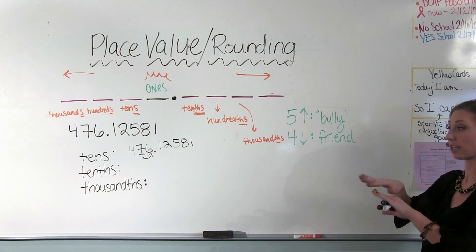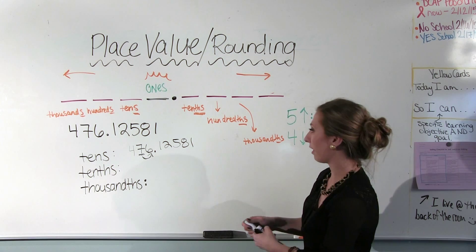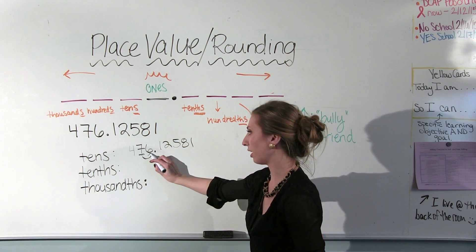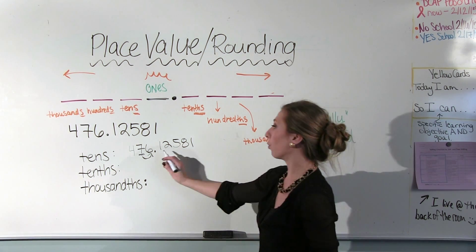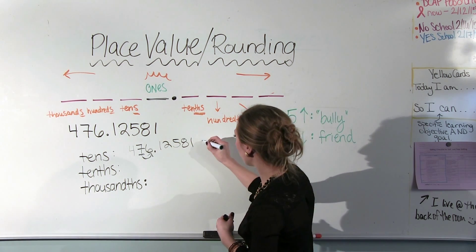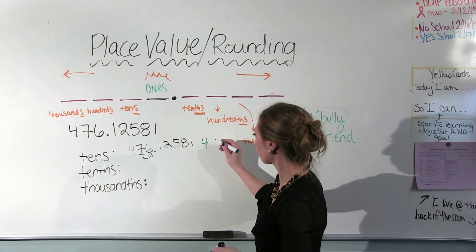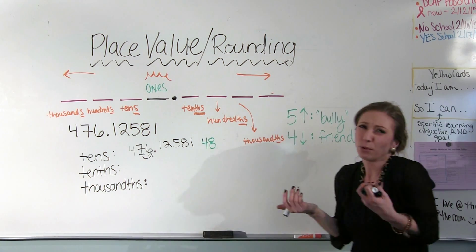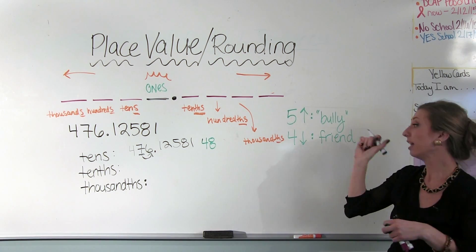Once you know your place value, that can help you with rounding. Let's say I have this number here. If I wanted to round it to the tens place, what I need to do first is identify which digit of this number is in the tens place. Here's my decimal point, here's my ones place. I'm going to count from the ones place — you always start there — and then to the left of it, we've got the tens place. If I'm rounding to the nearest tens, I'm going to find out which ten this number is closest to.